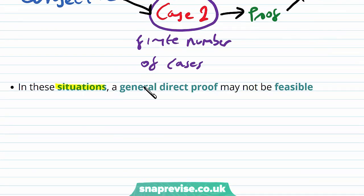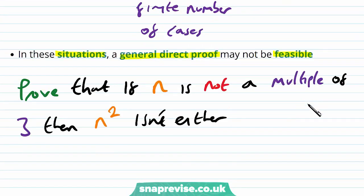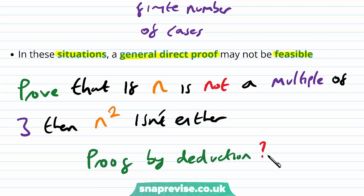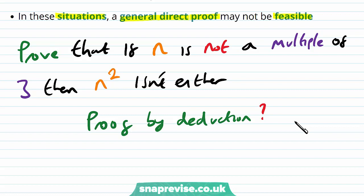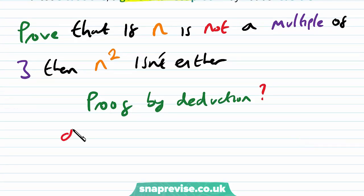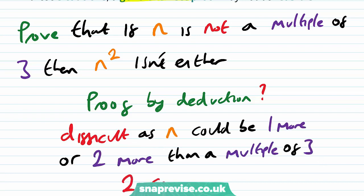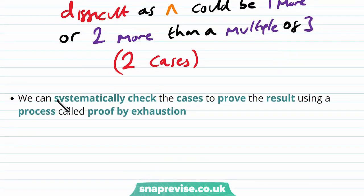In these situations a general direct proof may not be feasible. Consider that we're asked to prove: if n is not a multiple of 3, then n squared isn't either. It would be difficult because n can be one more or two more than a multiple of 3 — i.e. we have two cases to check. And this is why we check each case separately, systematically checking cases using a process called proof by exhaustion.